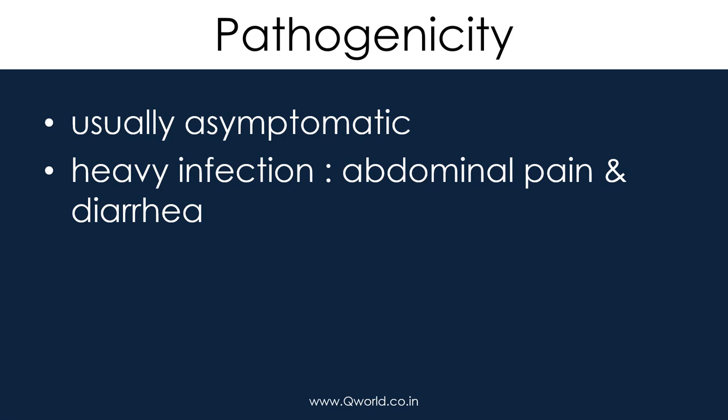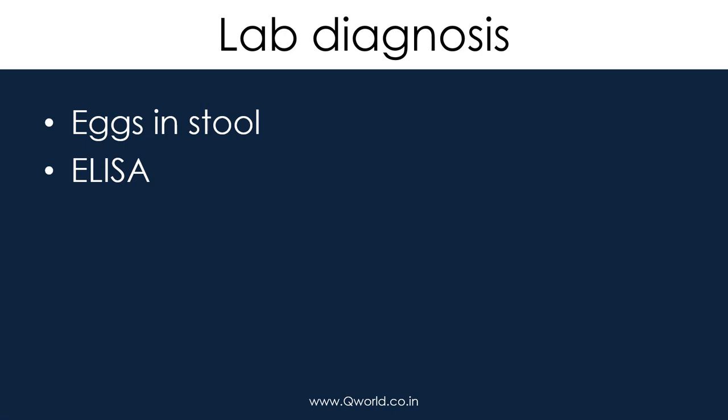Pathogenicity: it is usually asymptomatic unless heavy infections occur. Due to the adult worm and larva in the small intestine, it can cause abdominal pain and diarrhea.